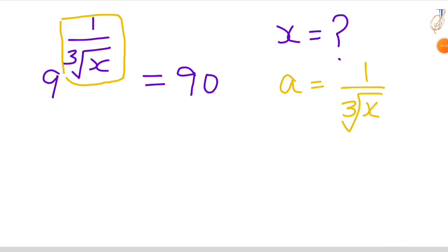Then our equation turns into 9 power a that is equal to 90. If you divide both sides by 9, then right hand side you will get 10.